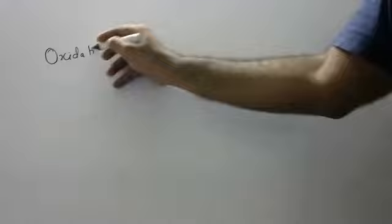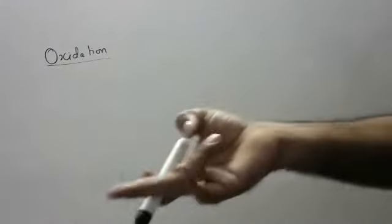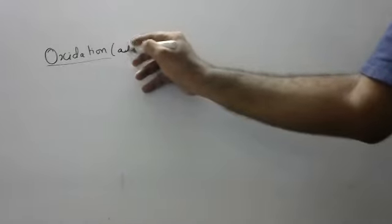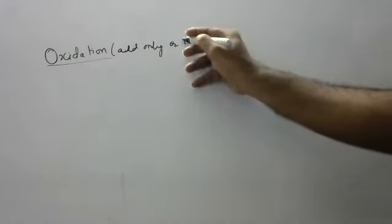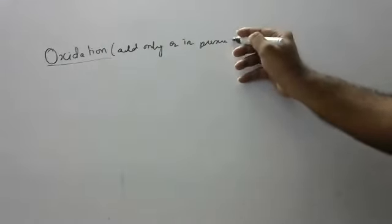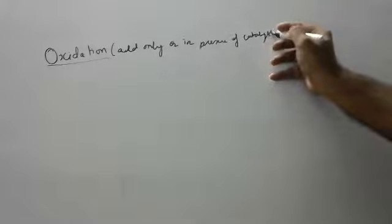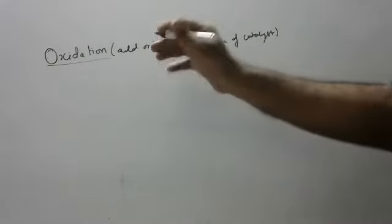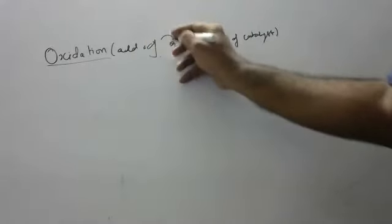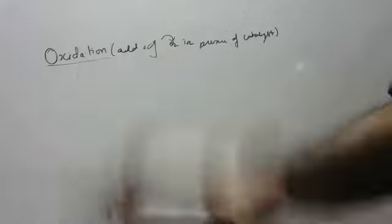What is meant by oxidation? Yesterday I told about combustion, today I am telling you about oxidation. There also it is oxygen, here also it is oxygen, but the difference is there — combustion is heating anything in the presence of air, and many times oxygen will be involved. But in oxidation, compulsorily we add only oxygen, and that too in the presence of a catalyst. If a catalyst is not there, oxidation won't occur. So oxidation is the addition of oxygen in the presence of a catalyst.